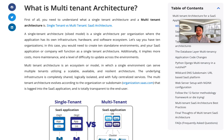Single-tenant implies more cost, more maintenance, and a level of difficulty to update across environments. A multi-tenant architecture is an ecosystem or model in which a single environment can serve multiple tenants, utilizing a scalable, available, and resilient architecture.